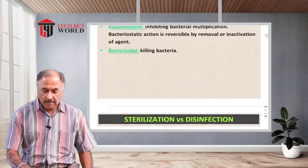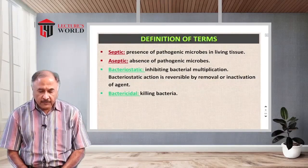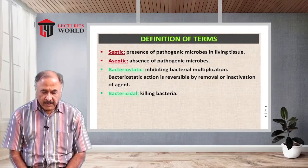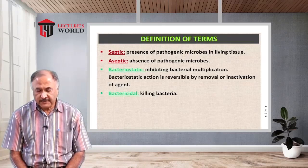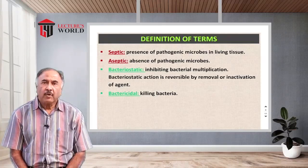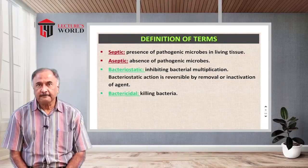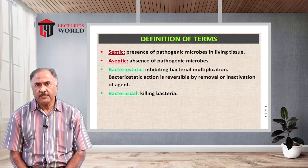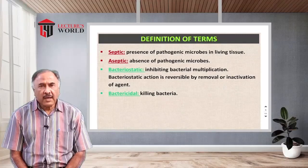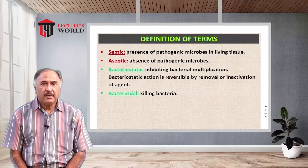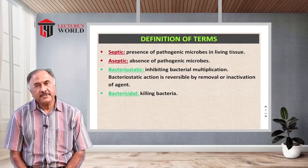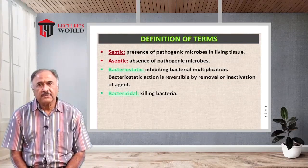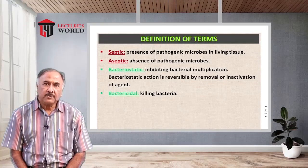There are two other important words to mention: septic and aseptic. Septic means the presence of pathogenic microorganisms in tissues or in our body, which leads to sepsis — sepsis basically means putrefaction. When a pathogenic organism is present in tissues, it will multiply, grow, and lead to sepsis. Antiseptic means a substance, usually a chemical substance, which prevents the process of sepsis.